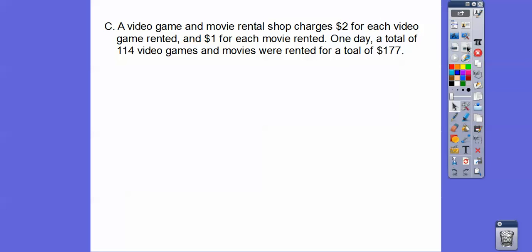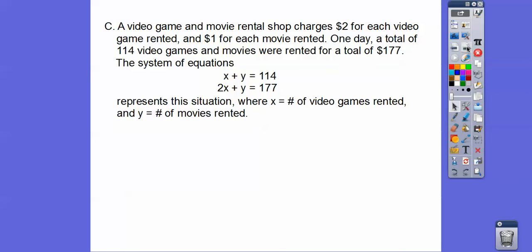A video game in a movie rental shop charges $2 for each video game rented and $1 for each movie rented. One day, a total of 114 video games and movies were rented for a total of $177. Okay, and then they give us the system. So here it is right here. So they'll always give you the system. We can just solve that. So here's the system that represents this situation where X is the number of video games and Y is the number of movies rented.